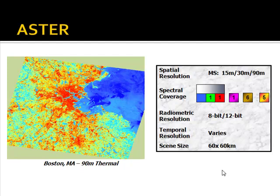Here's an Aster image. Aster has varying spatial resolutions: in the visible and near-infrared, it has green, red, and near-infrared bands, all at 15-meter resolution. In the short and mid-wave infrared it has six bands at 30-meter resolution, and five thermal bands all at 90-meter resolution. Depending on the band, it has either 8-bit or 12-bit radiometric resolution. The temporal resolution varies because it's an on-demand system, and the scene size is 60 by 60 kilometers.